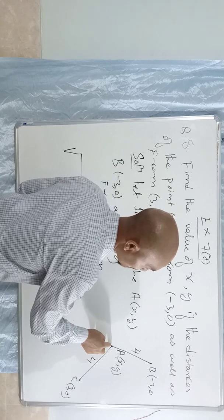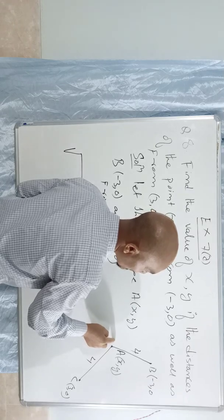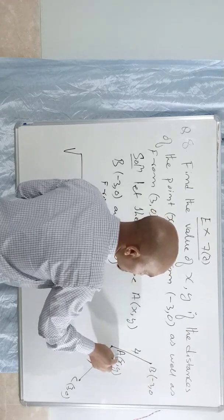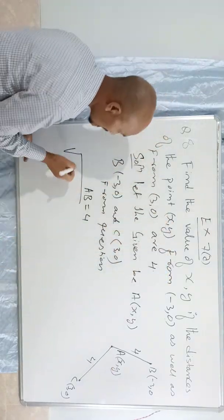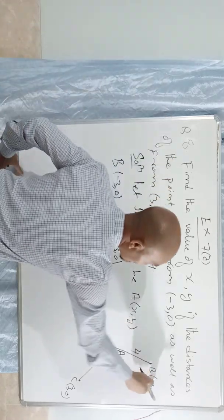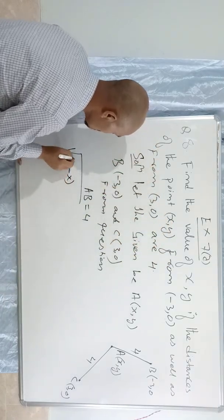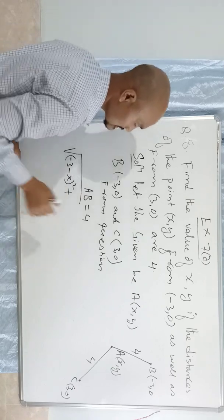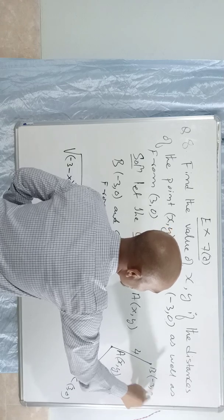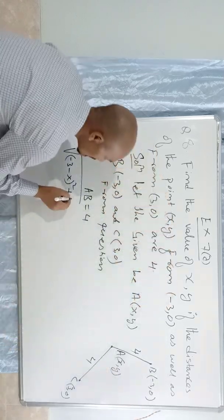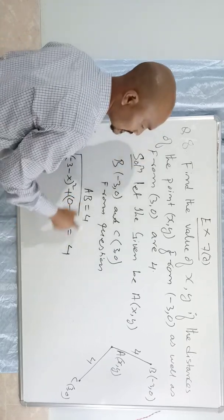Point A is the initial and point B is the final. So the final of X is -3, the initial of X is x. The final minus the initial of X is (-3 - x), whole thing squared. Plus the value of Y: the final is 0 and the initial is Y, so it is (0 - y), whole thing squared, equal to 4.